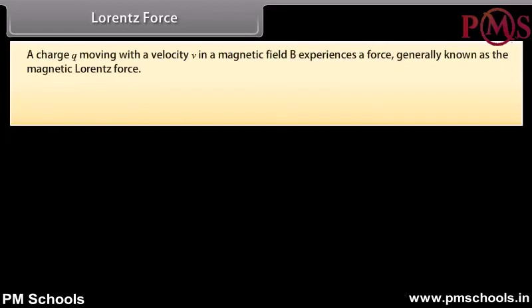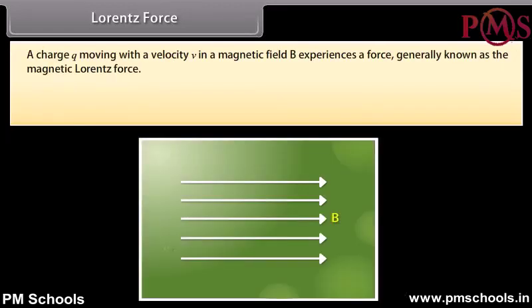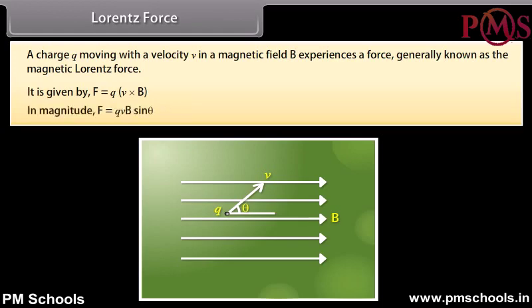A charge Q moving with a velocity V in a magnetic field B experiences a force generally known as the magnetic Lorentz force. It is given by F = Q(V × B). In magnitude, F = QVB sinθ.